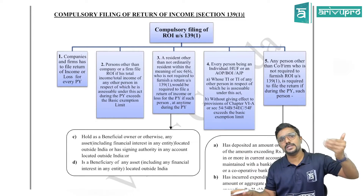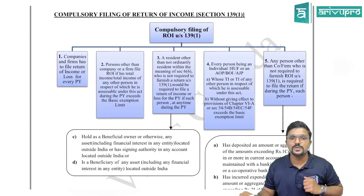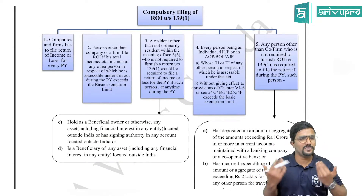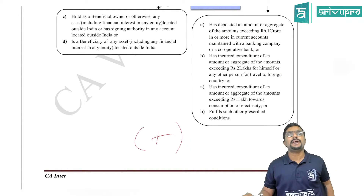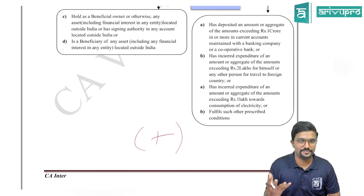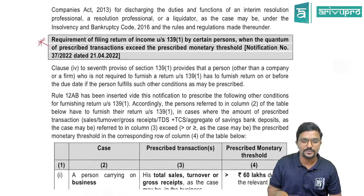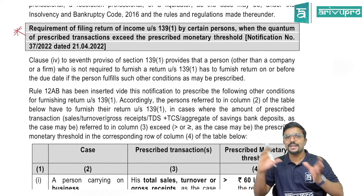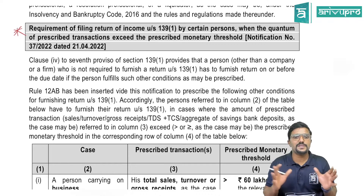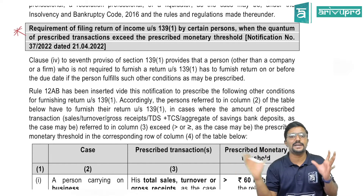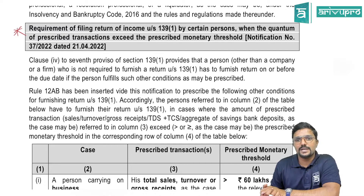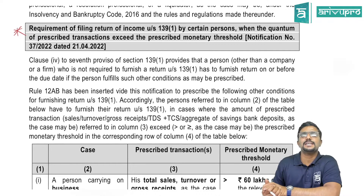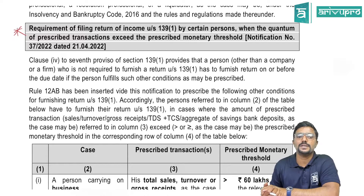Coming to Section 139 subsection 1 — who all should file return of income compulsorily. We have already covered the existing list in detail in our regular classes. Now they have added some more people based on transaction limits through Notification Number 37/2022 dated 21st April 2022. These are persons other than company or firm who are not required to furnish return under Section 139(1) but now must do so if they fulfil the prescribed conditions under Rule 12AB.